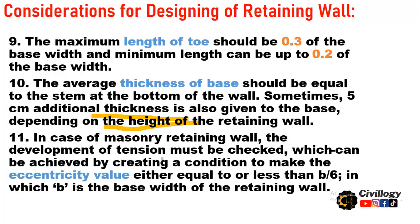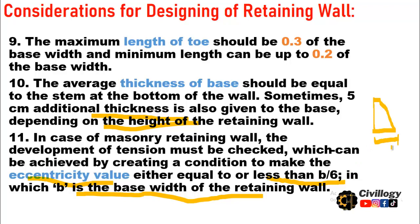Consideration eleven: In the case of a masonry retaining wall, the development of tension must be checked. This can be achieved by ensuring that the eccentricity value is either equal to or less than b/6, where b is the base width of the retaining wall. Masonry retaining walls are actually gravity retaining walls whose width is much larger, and they are trapezoidal in shape. So the eccentricity value must be less than or equal to b divided by 6.